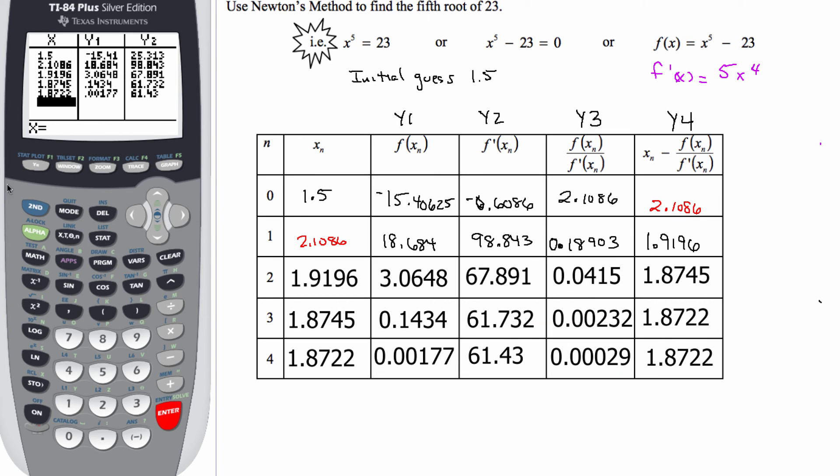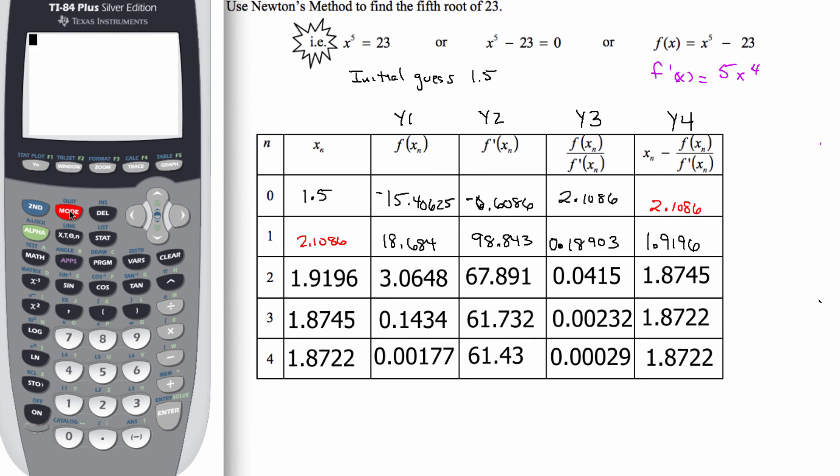Now what I want you to do is go back to your graphing calculator and check this out. If you do the fifth root of 23, if I do that, check it out. I'll get a value of 1.872171231. So the fifth root of 23 is about 1.8722. And we did that simply using algebra. So thank you, Newton, for introducing us to that technique, for helping us approximate the solution to finding the root of a problem.